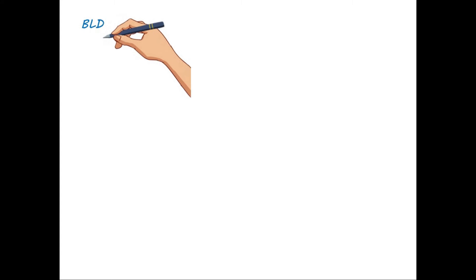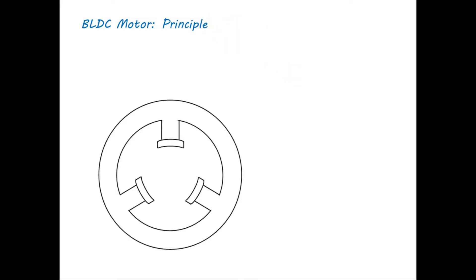Now, let us discuss the principle of BLDC motor. Here, in this example, the machine stator has three poles 120 degrees apart. Each pole has its own winding, called W1, W2, and W3. This winding is used to create electromagnet poles in the stator.